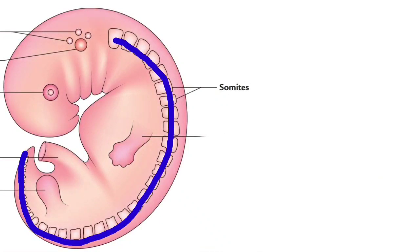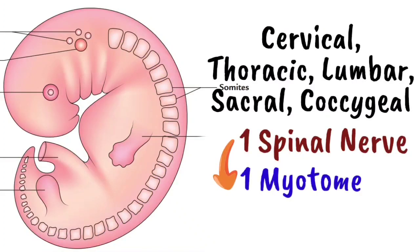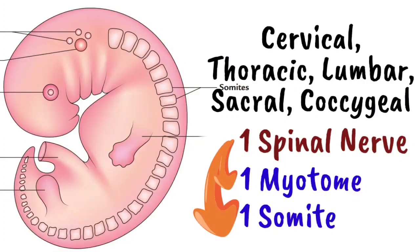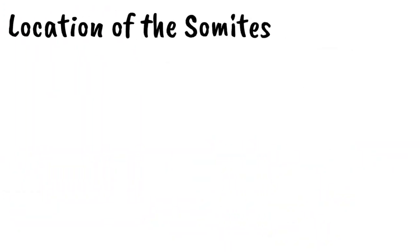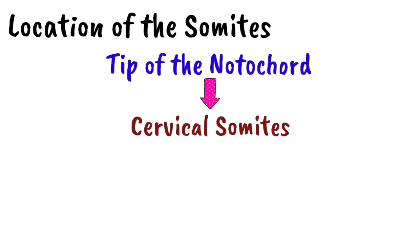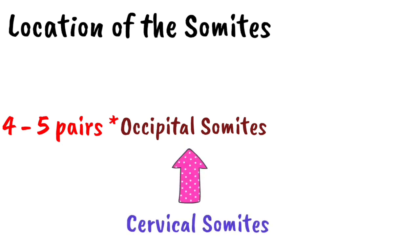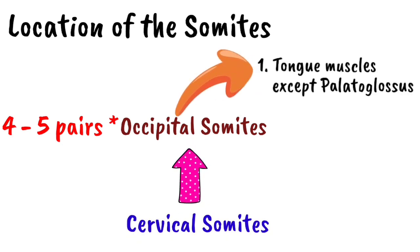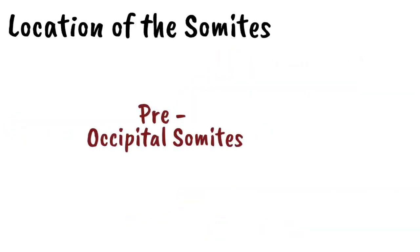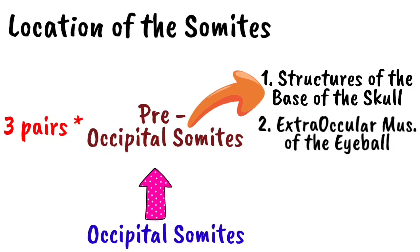Somites are uniformly distributed in the cervical, thoracic, lumbar, sacral, and coccygeal regions, with one spinal nerve supplying each myotome. The first cervical somite is found caudal to the tip of the notochord. The occipital somites, found in four to five layers cranial to the cervical somites, give rise to tongue muscles (except palatoglossus) and structures at the base of the skull. The preoccipital somites, three pairs, are further cranial and give rise to base of skull structures and extraocular muscles of the eye.